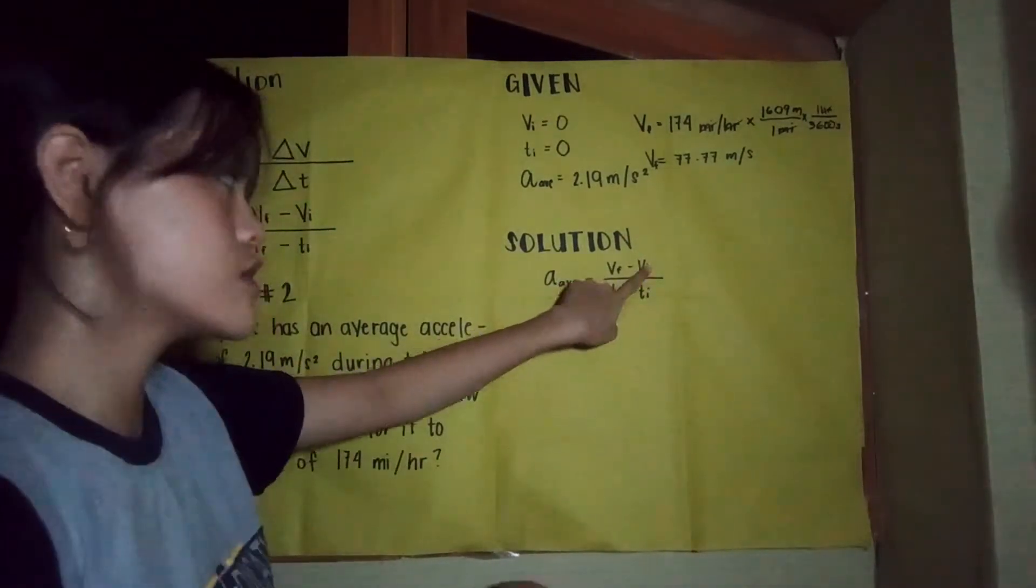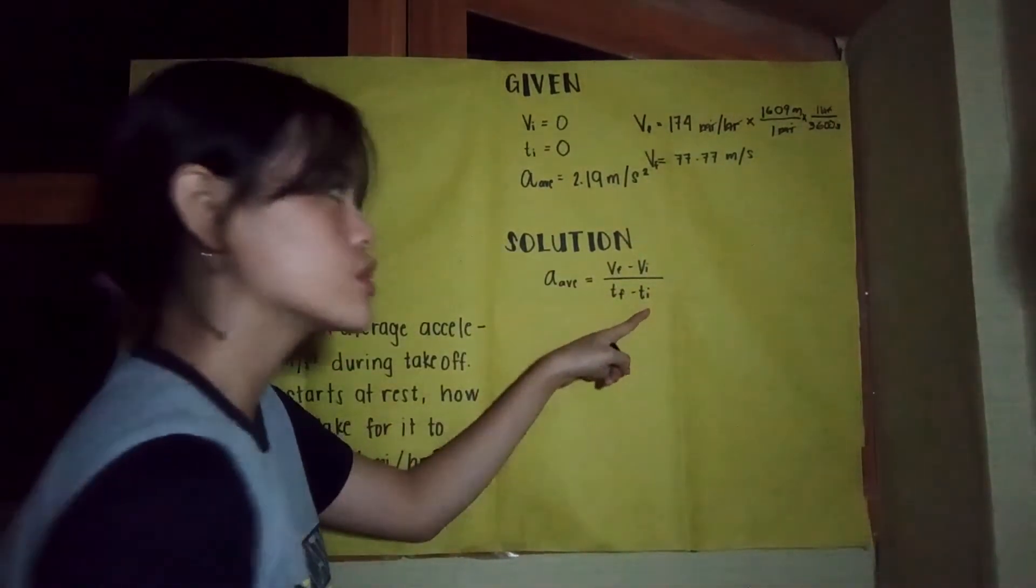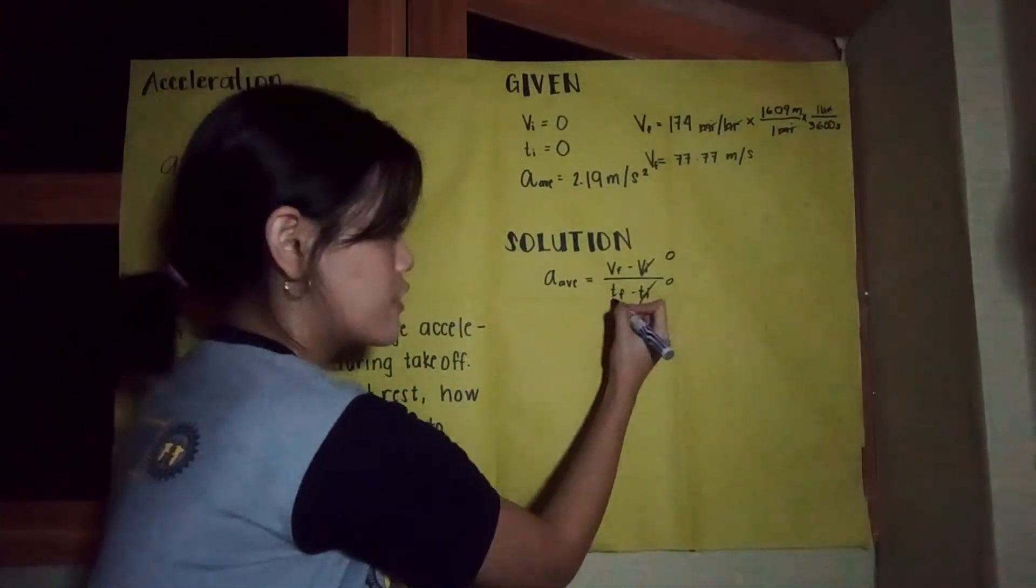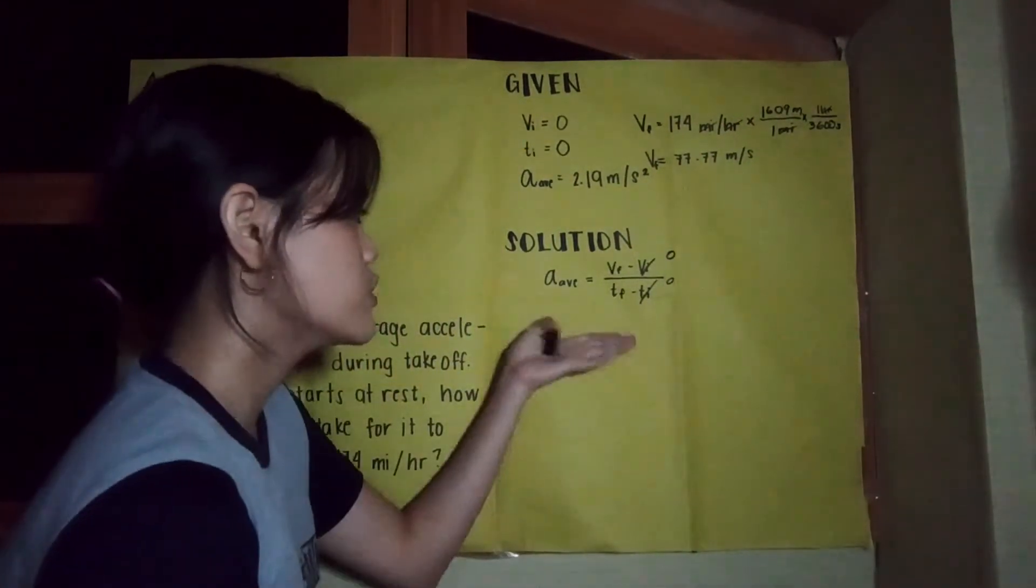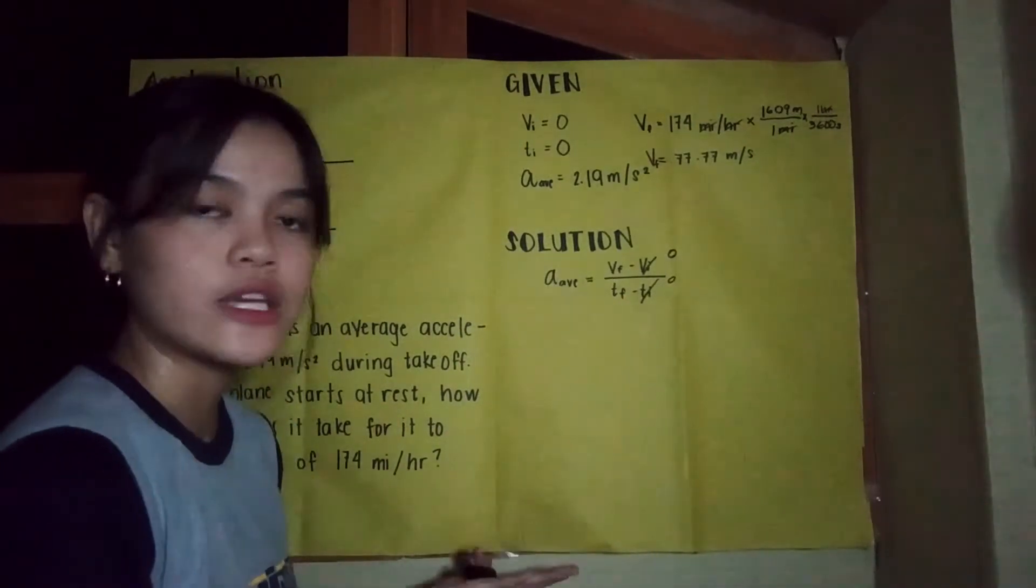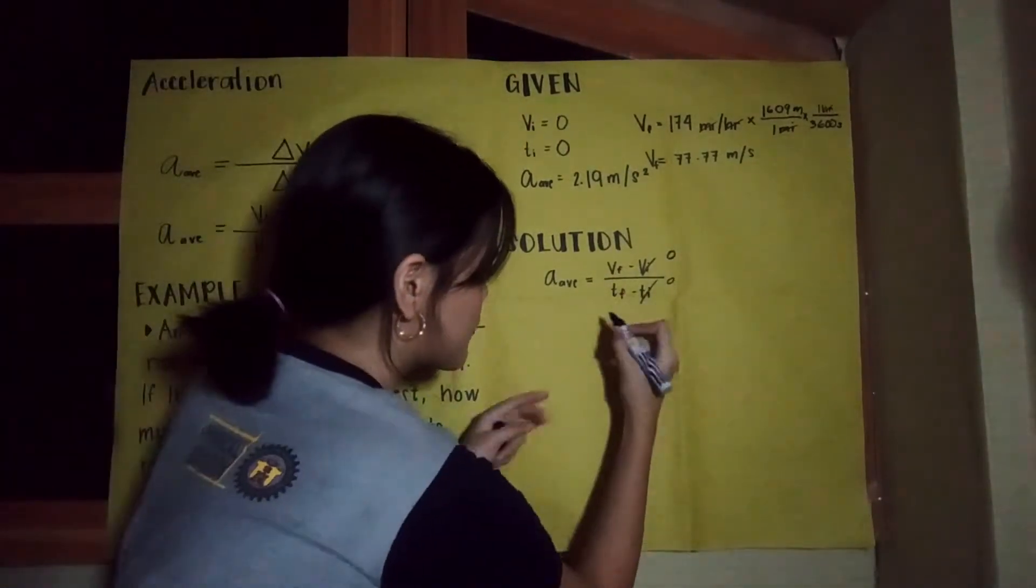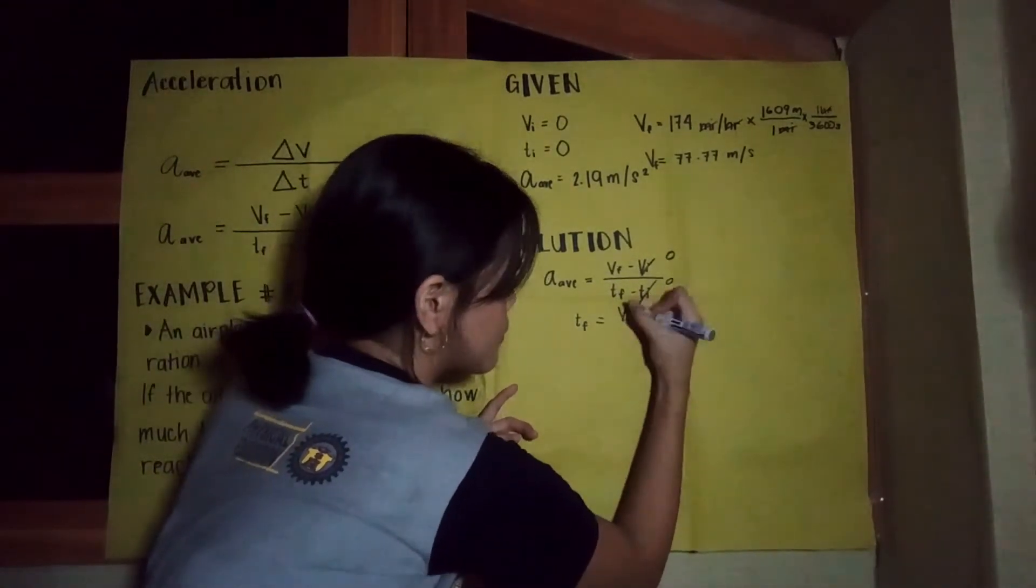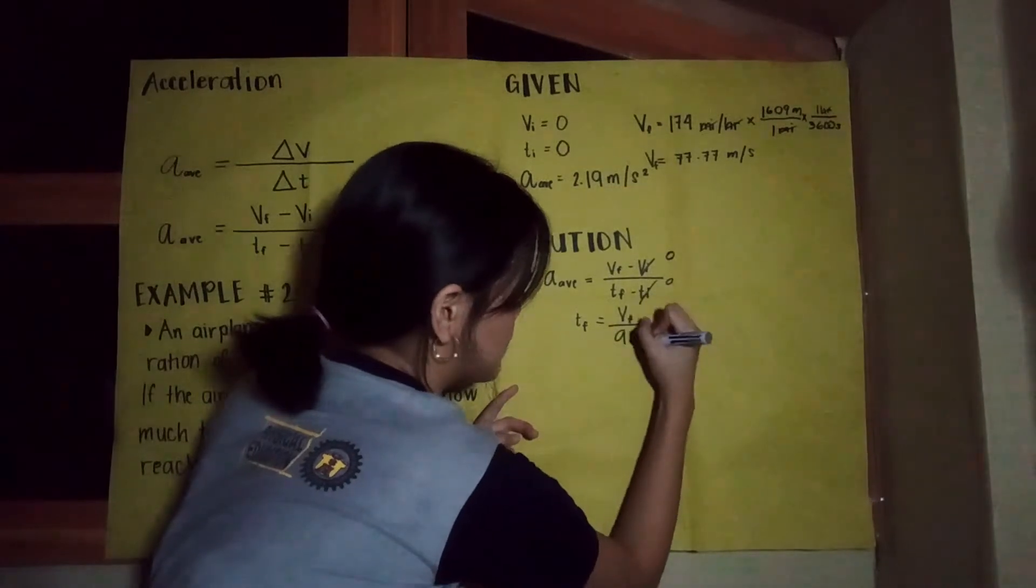Since our initial velocity and our initial time are equivalent to zero, we can already cancel this. What we're looking for is the final time. So we're just going to derive this equation to get an equation for our time. And then we're going to cross multiply and we will have final time is equivalent to final velocity over acceleration.